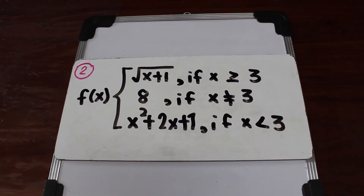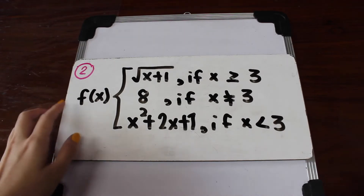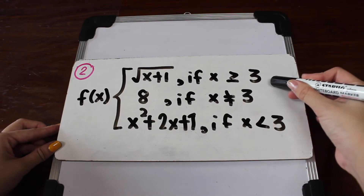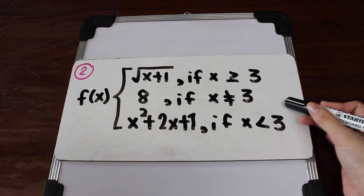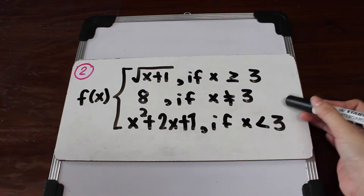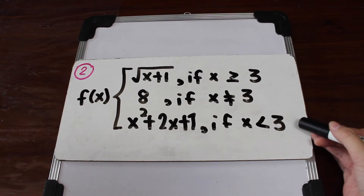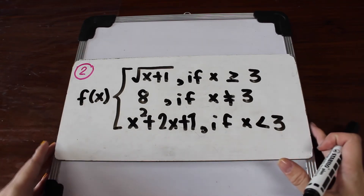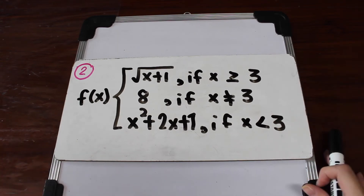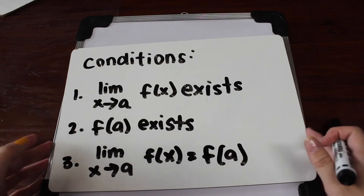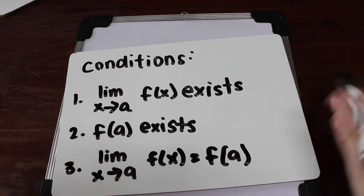Now in this example, we have another piecewise function. We need to find out if this function is continuous at x equals 3. Again, we need to satisfy the three conditions in order to determine if the function is continuous at that number. Let's start with the first condition.